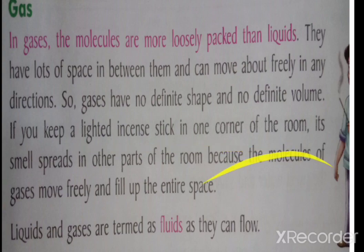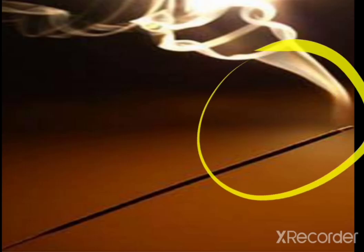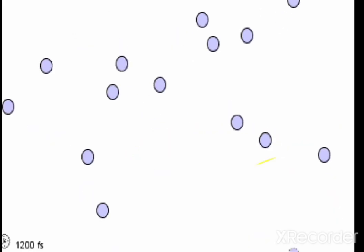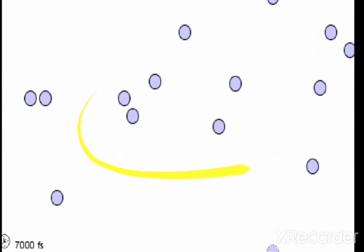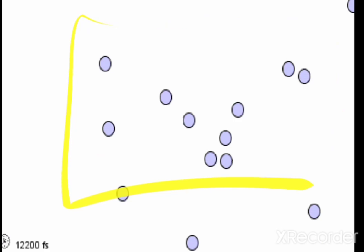Gases have no definite shape and no definite volume. For example, if you keep a lighted incense stick in one corner of the room, the smell will spread throughout the room — this shows how gas molecules move freely in all directions.